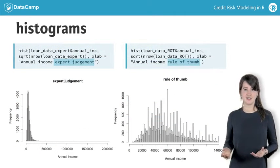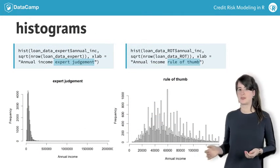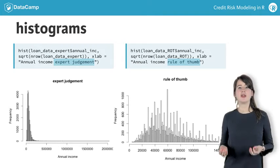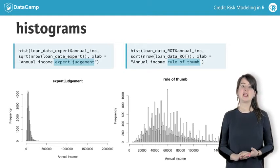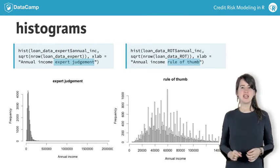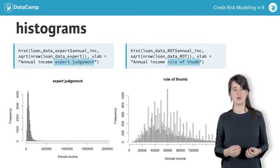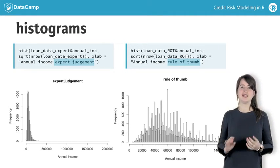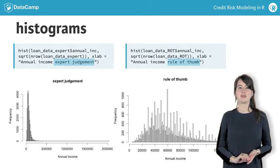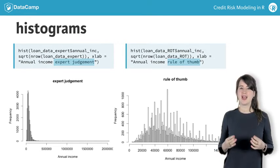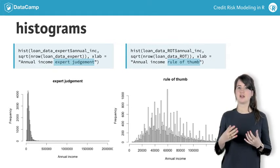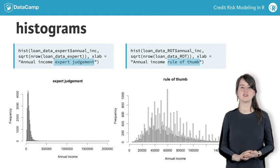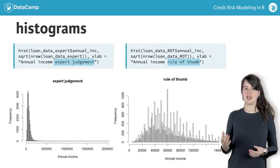After deleting outliers, you get the following results. These histograms are more informative than the initial ones, including the outliers, especially the histogram that was constructed using the rule of thumb. Note that quite some observations were deleted using this rule of thumb. Even if you don't plan to actually leave out these outliers in your analysis, it might still be useful to delete them temporarily when visualizing the data.